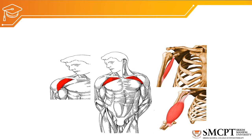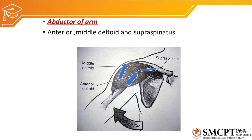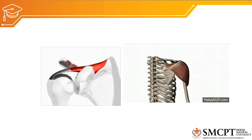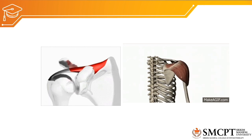Now, the muscles functioning at the glenohumeral joint. The flexors of the glenohumeral joint are the anterior deltoid, pectoralis major, coracobrachialis, and long head of biceps. Abductors of the glenohumeral joint are mainly the anterior and middle deltoid and supraspinatus. You can see here how the supraspinatus contracts to create abduction of the glenohumeral joint, as well as the deltoid. All three fibers of the deltoid — anterior, middle, and posterior — contract to create pure abduction of the glenohumeral joint.